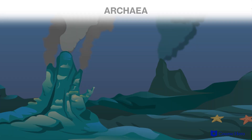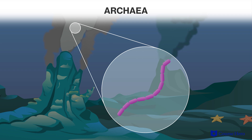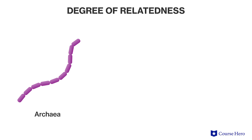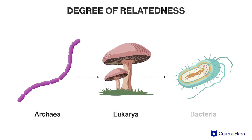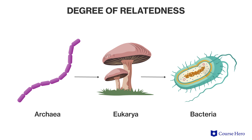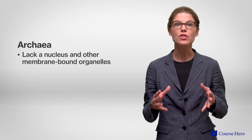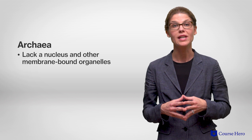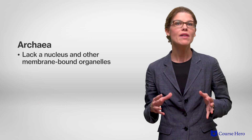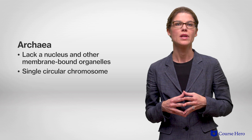As previously discussed, archaea share some characteristics with the domain Bacteria, but genetic and other evidence indicates that archaea diverged from bacteria a very long time ago. Archaea are currently thought to be more closely related to eukaryotes than to bacteria, their fellow prokaryotes. Like bacteria, archaea cells lack a nucleus and other membrane-bound organelles, and they also have a single circular chromosome.